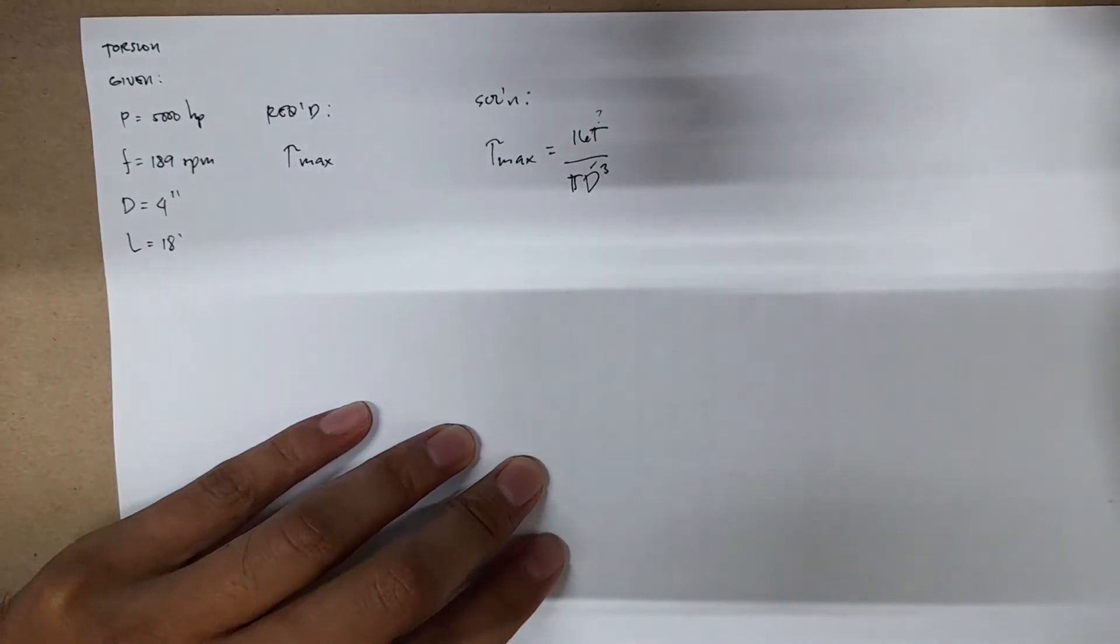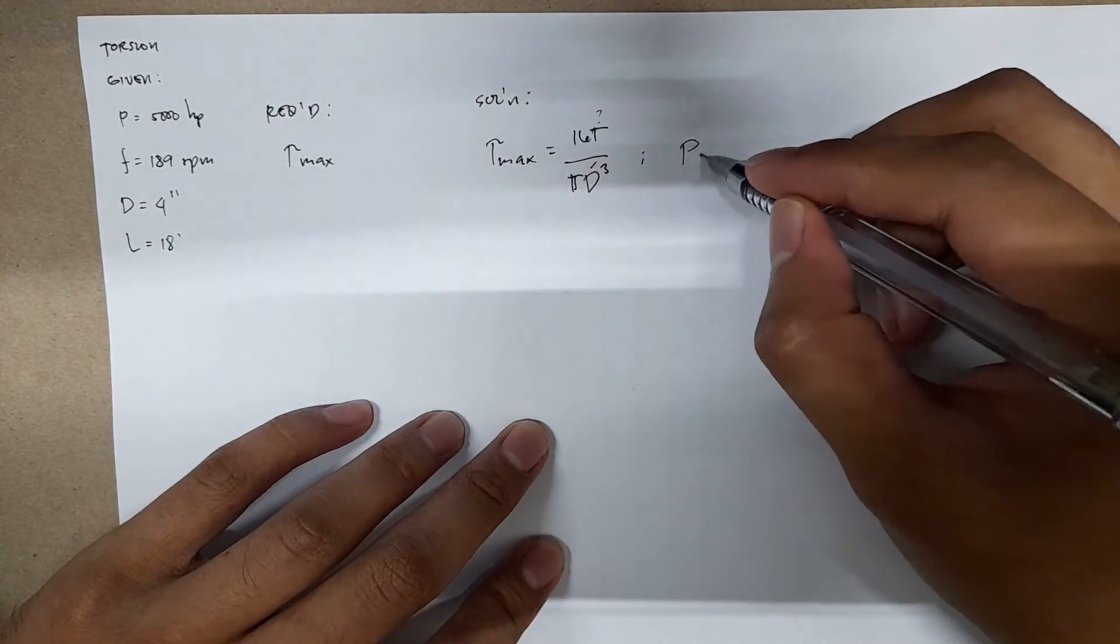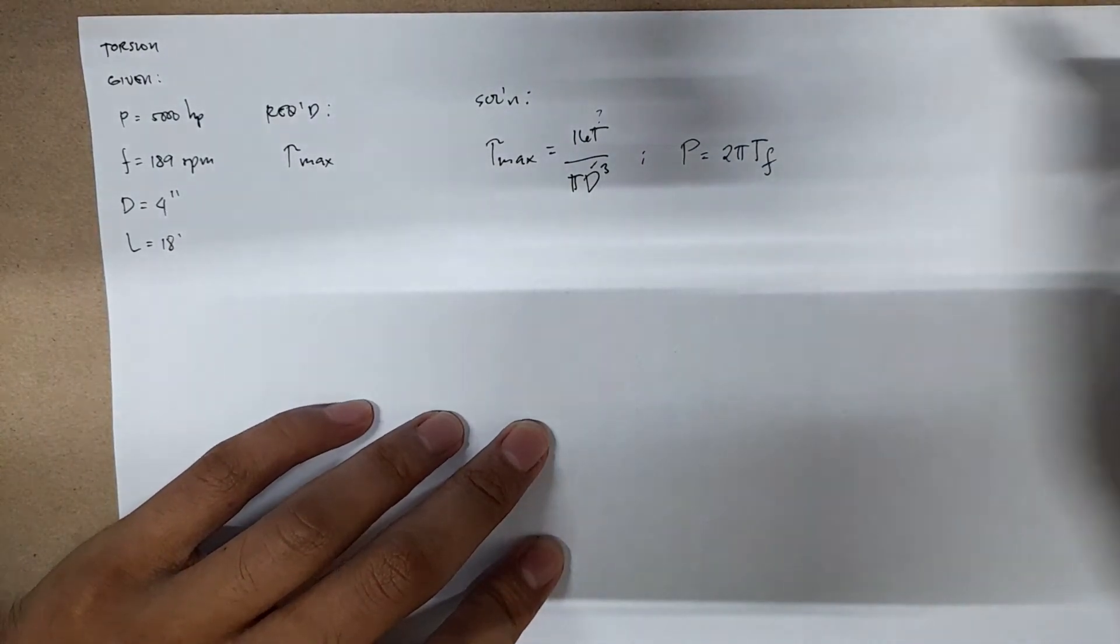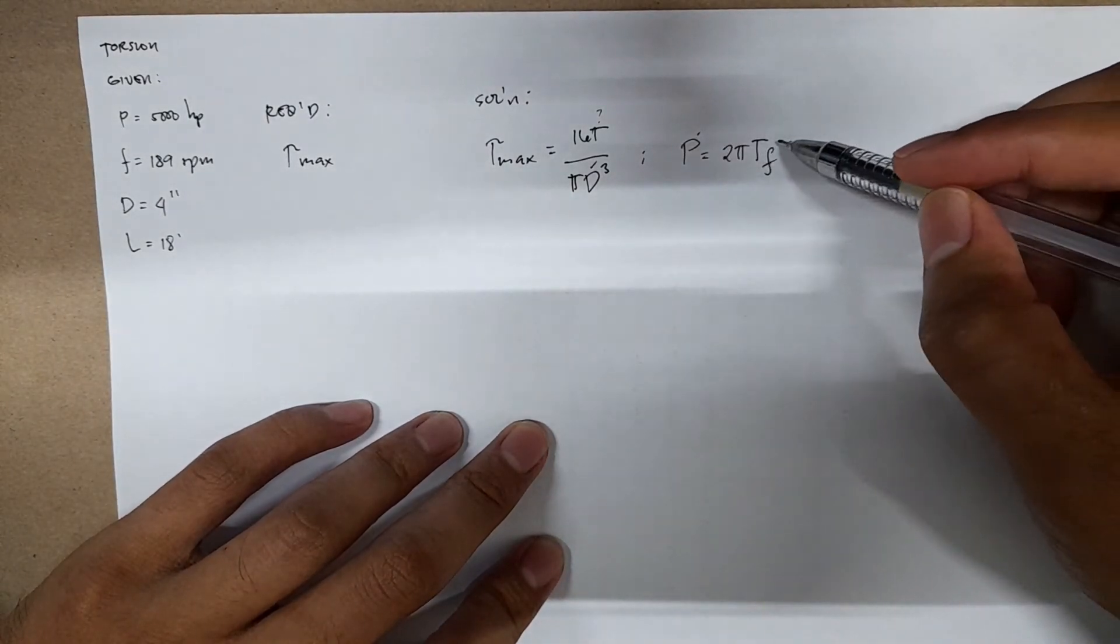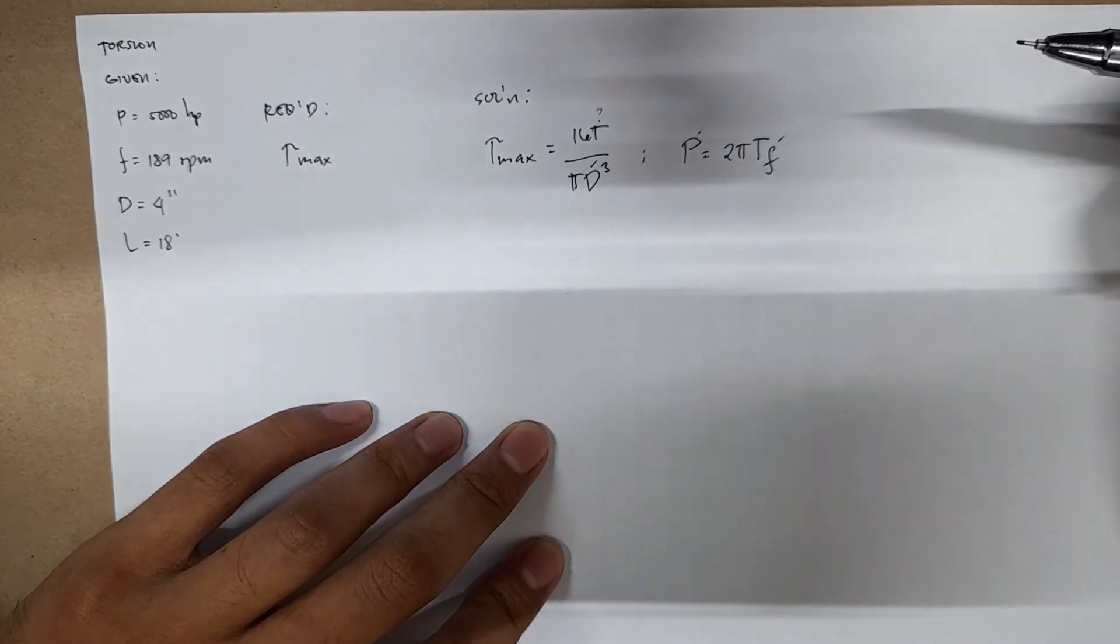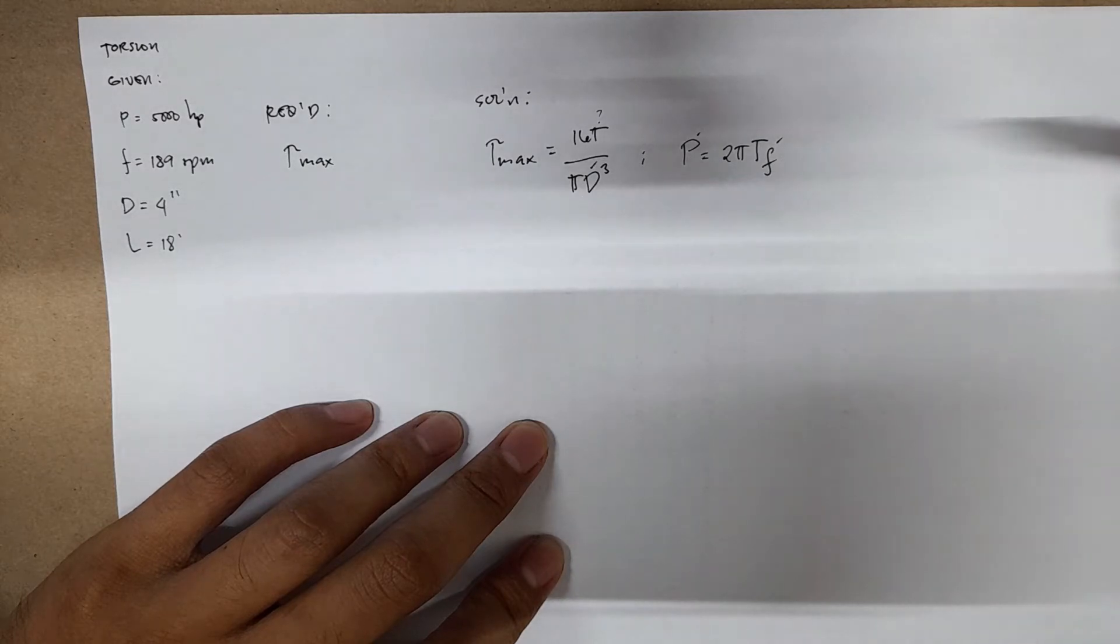We also have an equation of power, which is 2 pi T f. Power is given, and f is also given, but take note that f here is in revolutions per second or cycles per second or hertz.